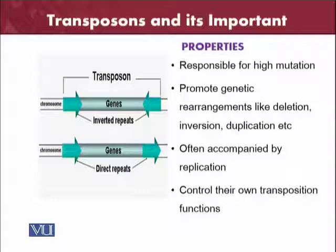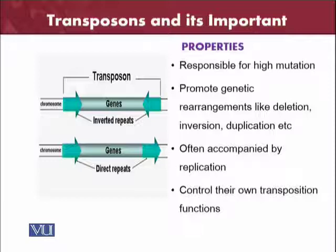The properties of transposons: they are responsible for high mutation and promote genetic rearrangements like deletion, inversion, and duplication. These genetic rearrangements are very important for the life cycle of viruses and any organism because they are most important from the mutation point of view. Mutation can change the genome of an organism positively or negatively. Transposons are always promoting genetic rearrangements which can cause many diseases, often accompanied by replication. They control their own transposition functions and don't follow the host or virus directives.